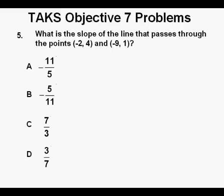What is the slope of the line that passes through the points negative 2 comma 4 and negative 9 comma 1? There are a lot of ways to do this problem. The way we'll look at first involves the use of the slope formula from the TAKS formula chart, and it's m equals y2 minus y1 over x2 minus x1.